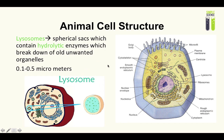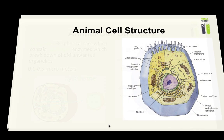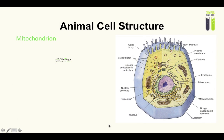An example of where lysosomes are used is in mammary glands after lactation, where they digest away the organelles responsible for lactation. Another common example is in white blood cells, where lysosomes are used to digest bacteria.